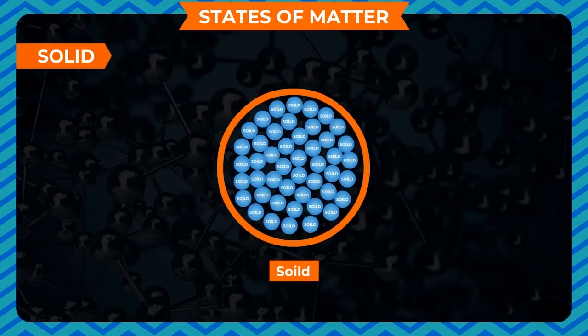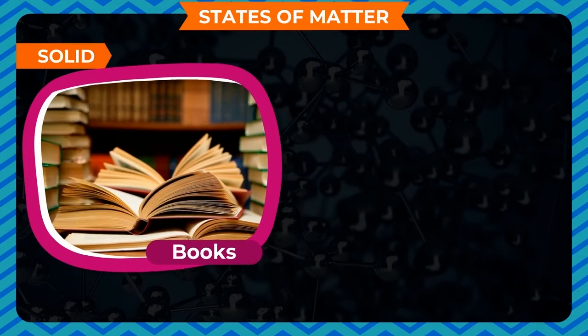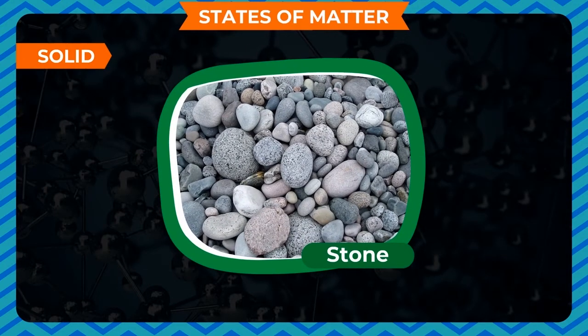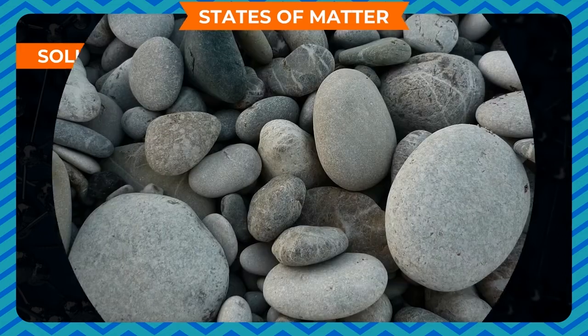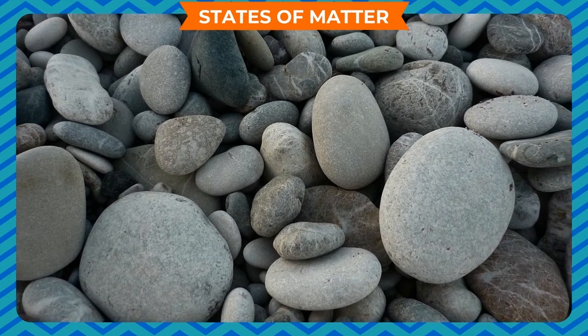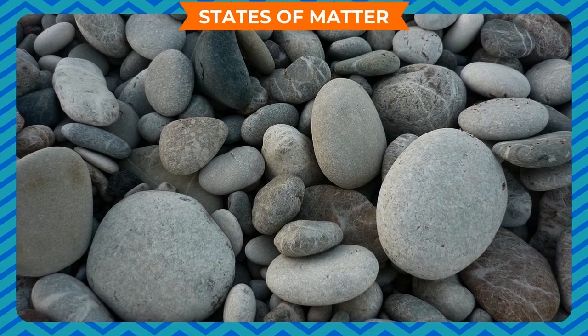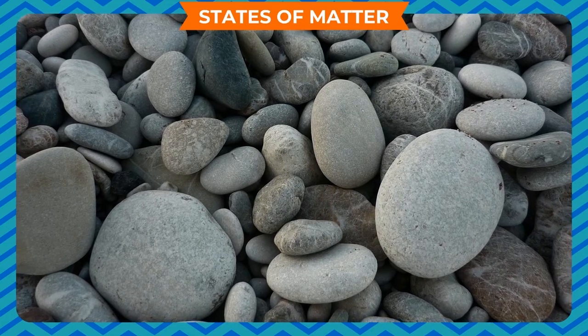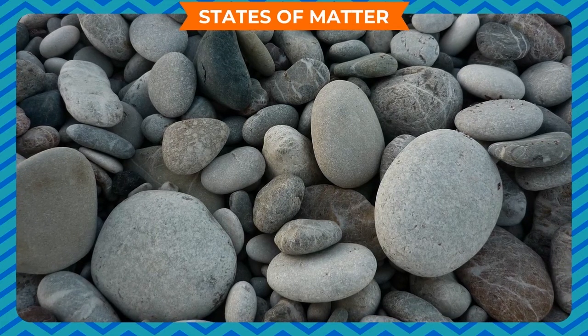Solid. Touch a book, pen or a stone. All of them are hard. They are called solid objects. Solids are usually hard because their molecules are packed together very closely and tightly. A solid has a fixed volume and shape.